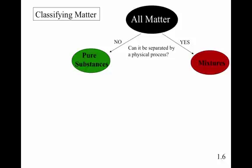So one physical process that we might use for separation would be sieving sand and rocks to separate them. If it's a pure substance, then we're not going to be able to separate it by physical processes.